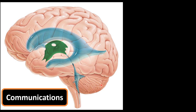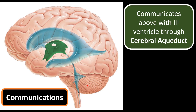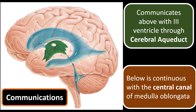Coming to the communications of the fourth ventricle: anteriorly we can identify the pons and the medulla oblongata, posteriorly the cerebellum. Above, it communicates with the third ventricle through the cerebral aqueduct of Silvius. Below, it communicates with the central canal of the medulla oblongata. So the fourth ventricle communicates above with the third ventricle and below with the central canal.